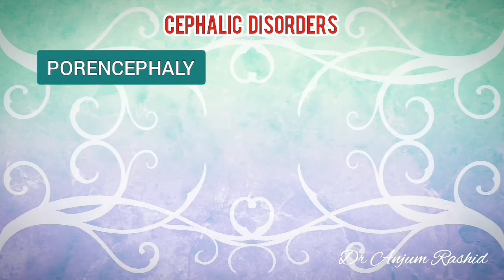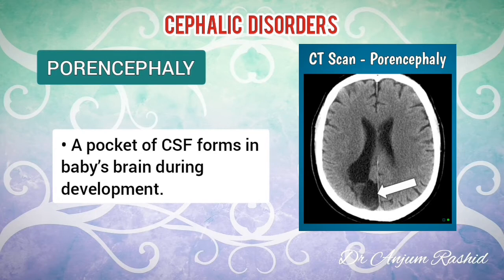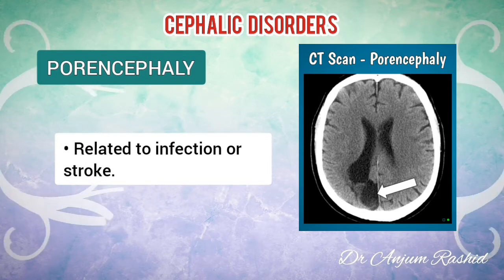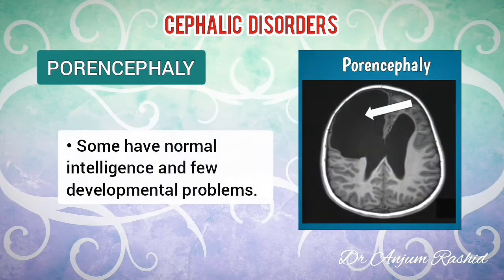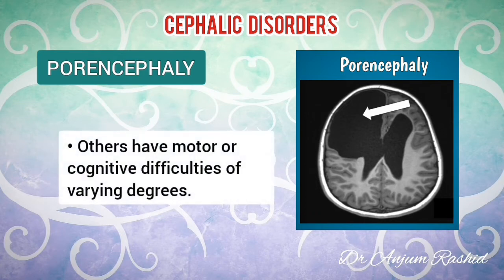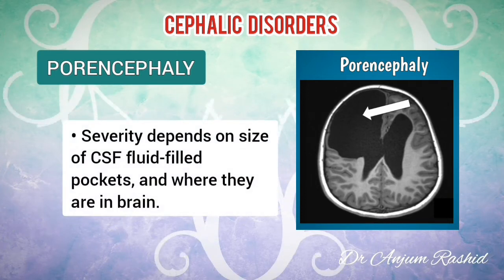The next type of cephalic disorder is porencephaly. This disorder occurs when a pocket of cerebrospinal fluid forms in the baby's brain during development. It is believed to be related to an infection or stroke either during pregnancy or the newborn stage. Some children with this disorder have normal intelligence and few if any developmental problems. Others may have motor or cognitive difficulties of varying degrees. The severity depends on the size of the cerebrospinal fluid-filled pockets and where they are in the brain.